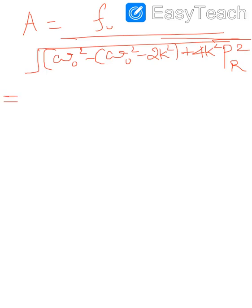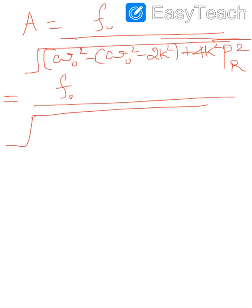Substituting, ω₀² − ω₀² cancels to zero, so the first squared term becomes (2k²)² = 4k⁴. The second term is 4k²pᵣ². The expression under the root becomes 4k⁴ + 4k²pᵣ².